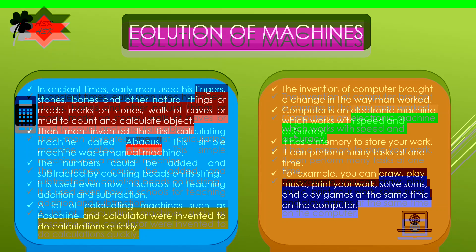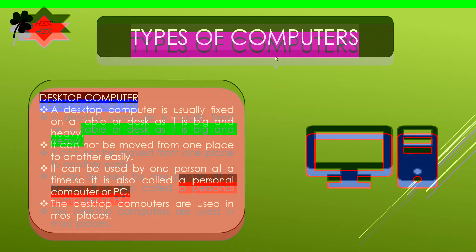It has memory to store your work and can perform many tasks at one time. For example, you can draw, play music, print your work, solve sums, and play games at the same time on the computer. Now let's look at the types of computers.